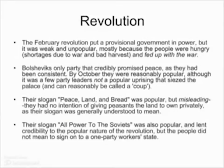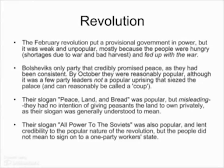It was the February Revolution which truly was a popular uprising and a people's revolution that put the provisional government into power. The provisional government was very popular and supported at the start, and was made up mainly of people who had been in the Duma. There were also problems because many of the politicians were moneyed interests, quite bourgeois, and distant from the peasants and poor proletariat. However, they were popular at the beginning — they had taken over from the Tsar.